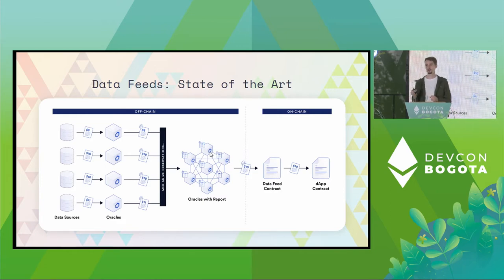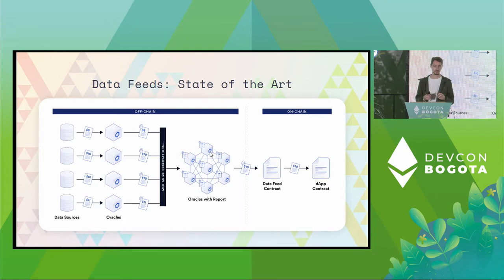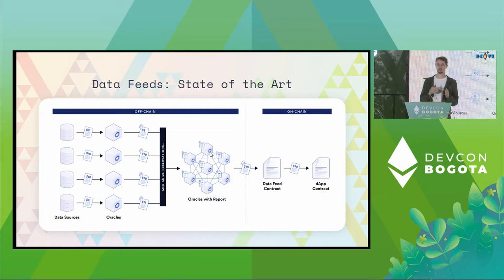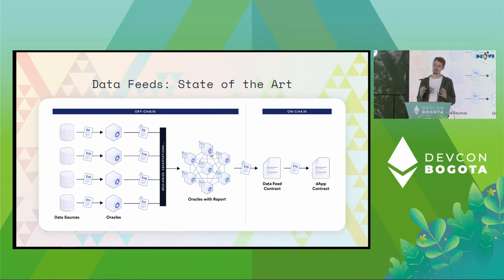Byzantine fault-tolerant means that they can handle arbitrary faults — any of these oracles could be malicious, faulty, down, or whatever else. As long as some subset of them is affected, depending on exactly how you set up the assumptions — either less than a third or less than half of the oracles — the overall system will keep functioning correctly.